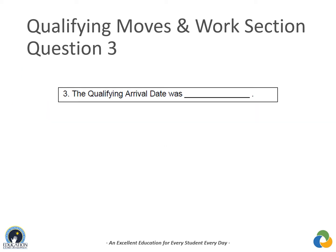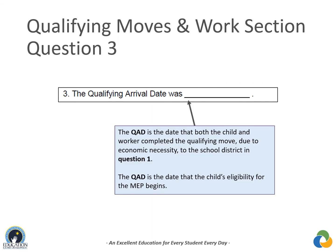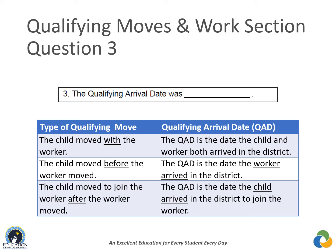Question 3 reads: 'The qualifying arrival date was [blank].' The qualifying arrival date (QAD) is the date both the child and worker completed the qualifying move due to economic necessity to the school district listed in question 1, and it is the date the child's eligibility for the Migrant Education Program begins. If the child moved with the worker, the QAD is the date they both arrived. If the child moved before the worker, the QAD is the date the worker arrived. If the worker moved before the child, the QAD is the date the child arrived.